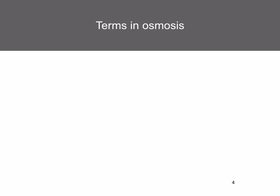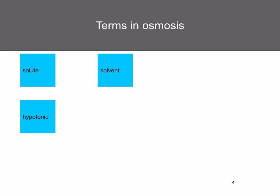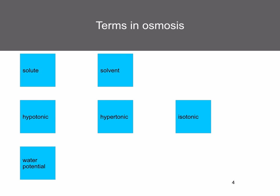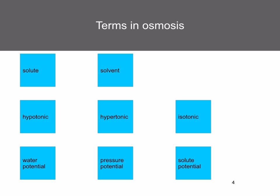Osmosis is a special form of diffusion, but only involving water molecules. There are some terms you need to be familiar with: solute, solvent, hypotonic, hypertonic, isotonic, water potential, pressure potential, and solute potential. It's a good idea to copy down these different words on separate pieces of paper and write the definitions on the back as we go along, so you can use them as flashcards.